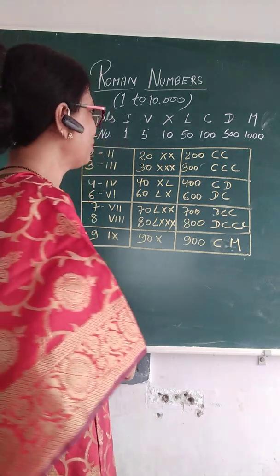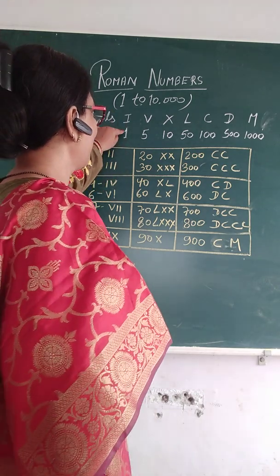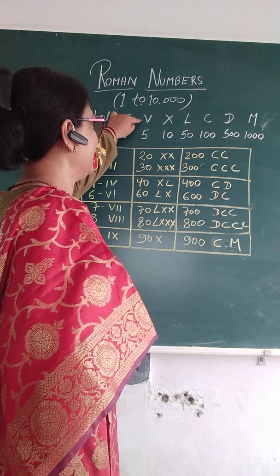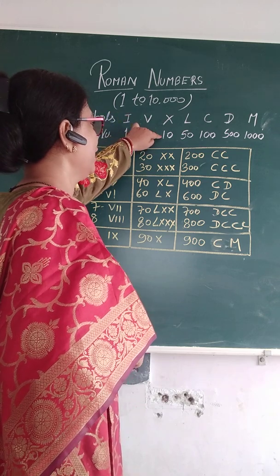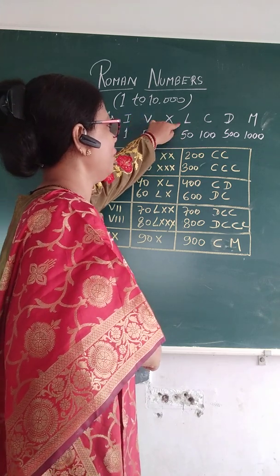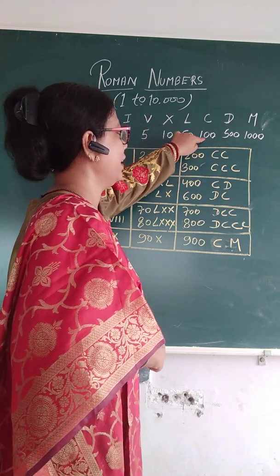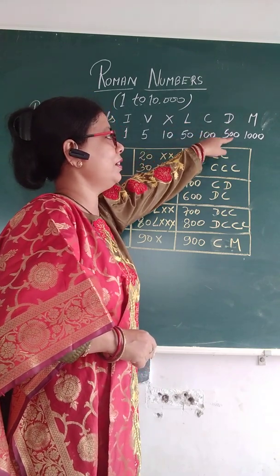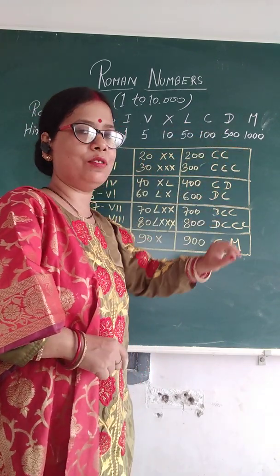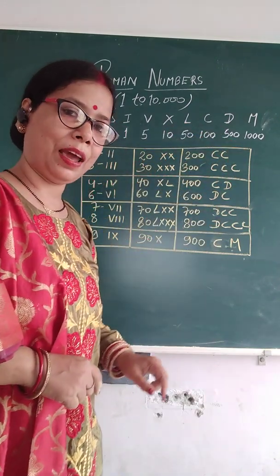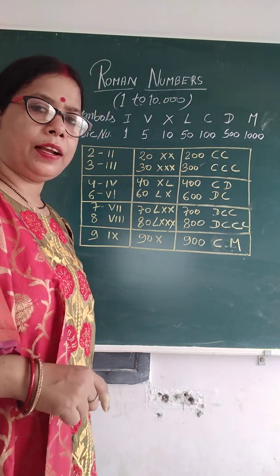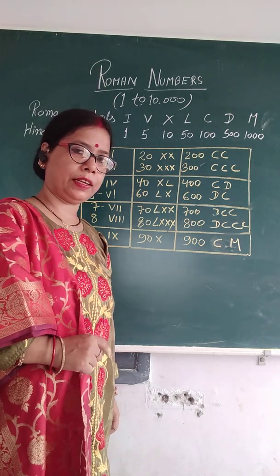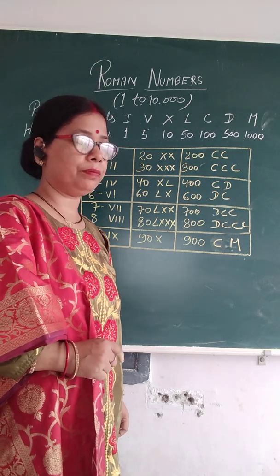So first: 1 is indicated by I, 5 by V, 10 by X, 50 by L, 100 by C, 500 by D, and 1000 by M. And for 1000, kabhi kabhi K bhi use karte hai, because M is also used for billion.